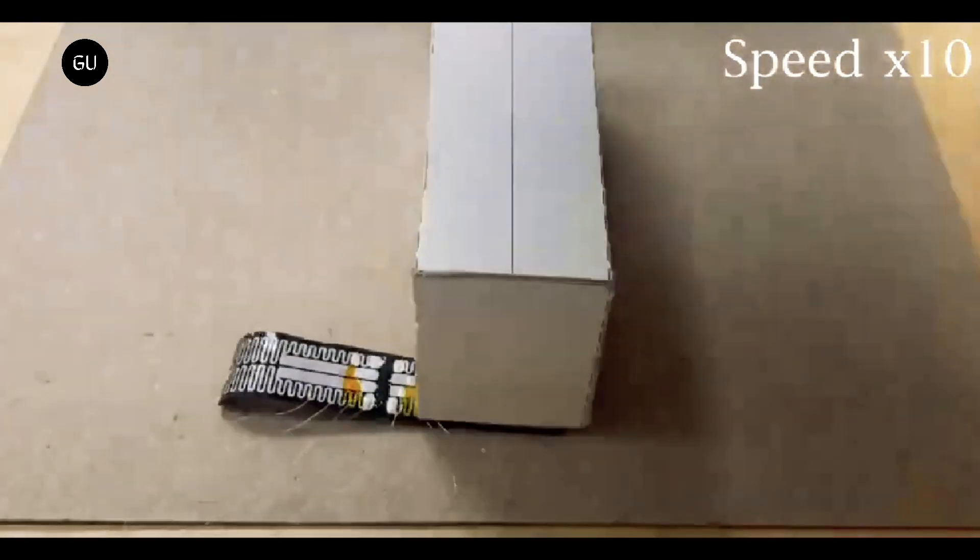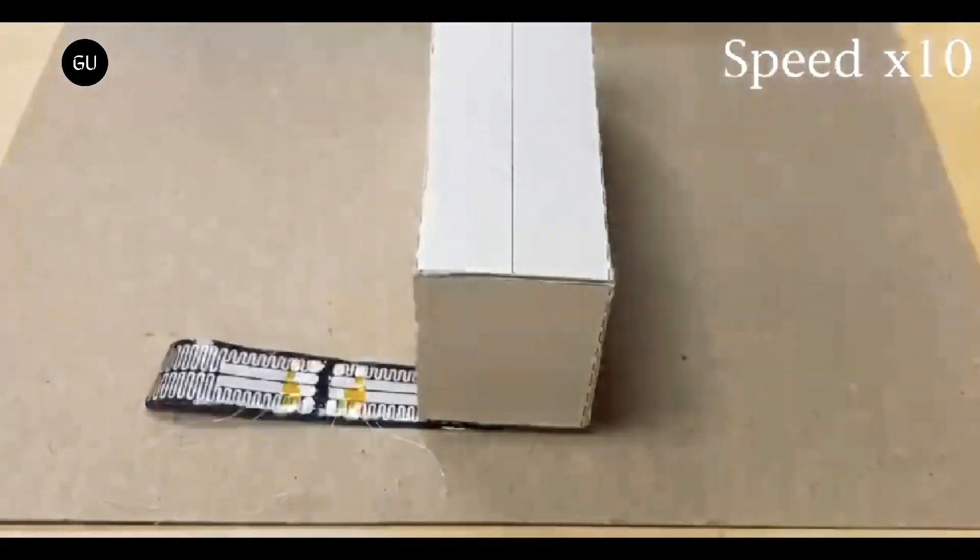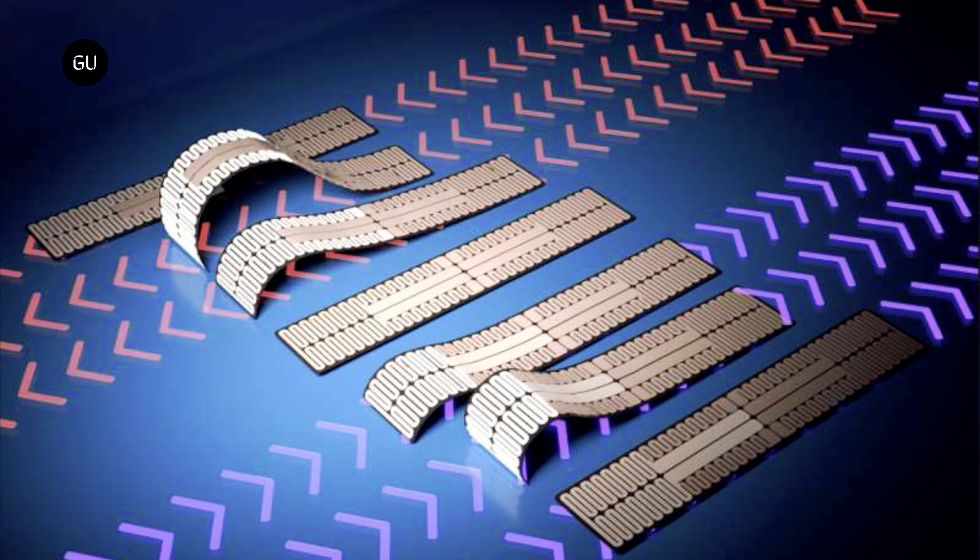The caterpillar bot consists of two layers of polymer which respond differently when exposed to heat. The bottom layer shrinks or contracts when exposed to heat, while the top layer expands when exposed to heat.